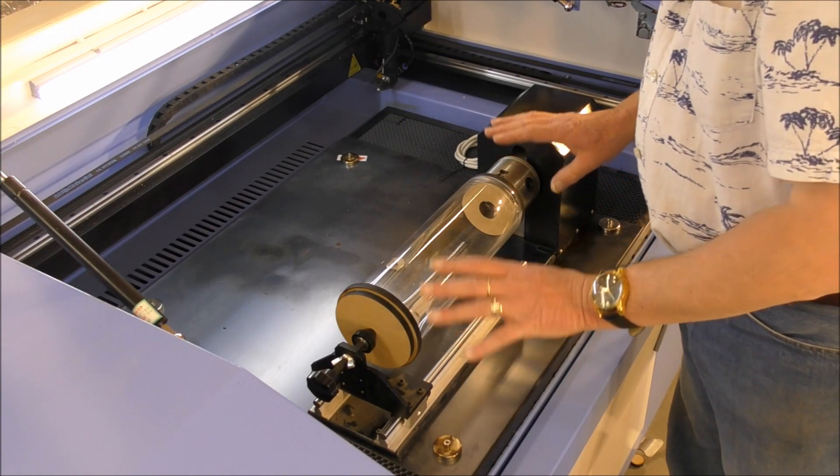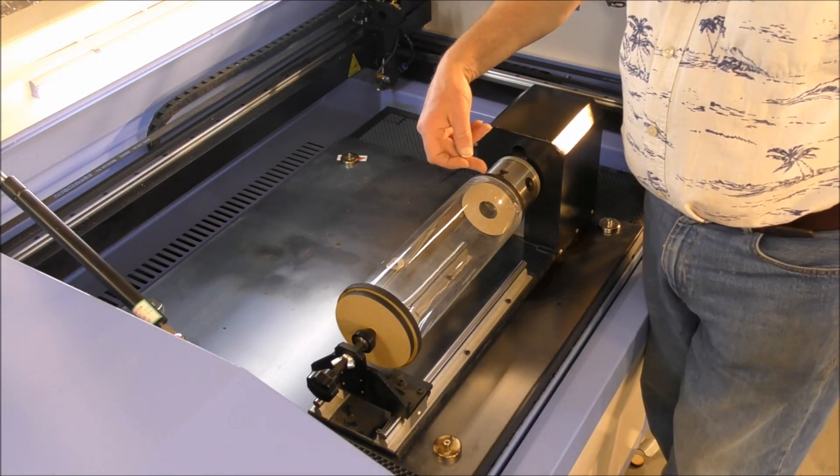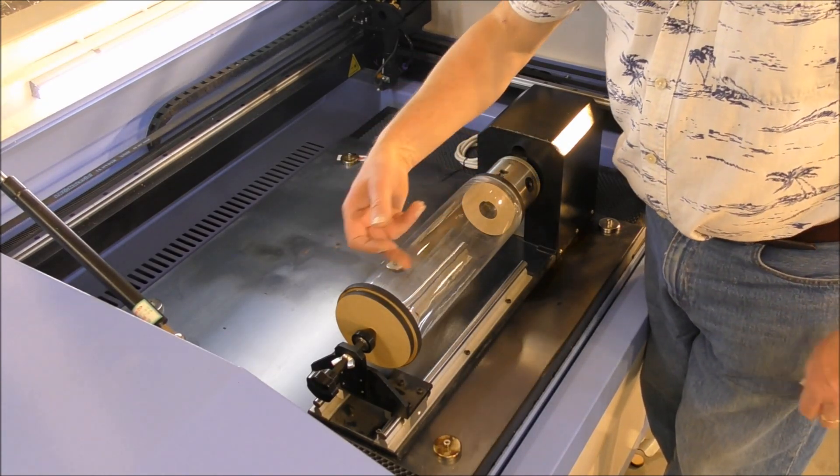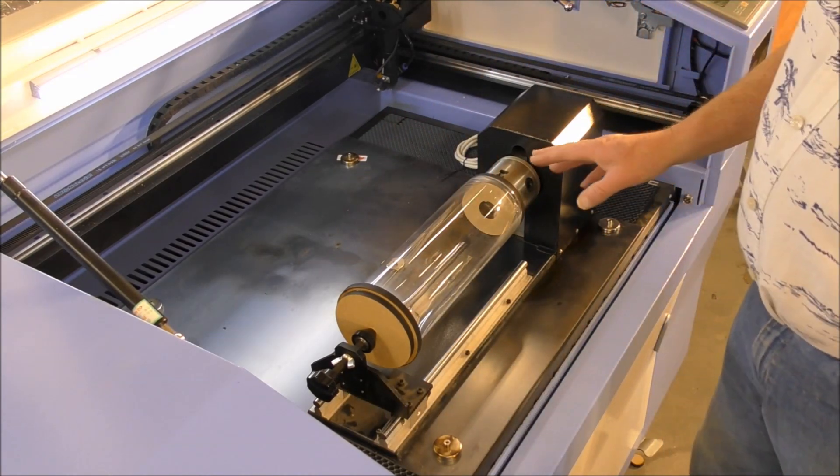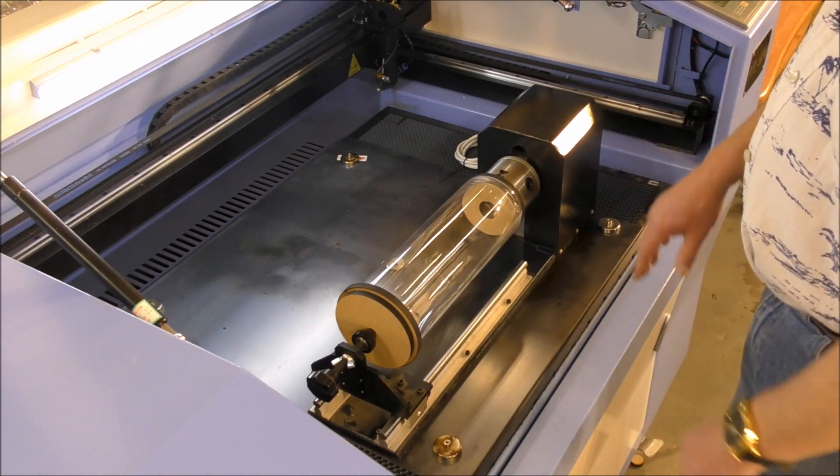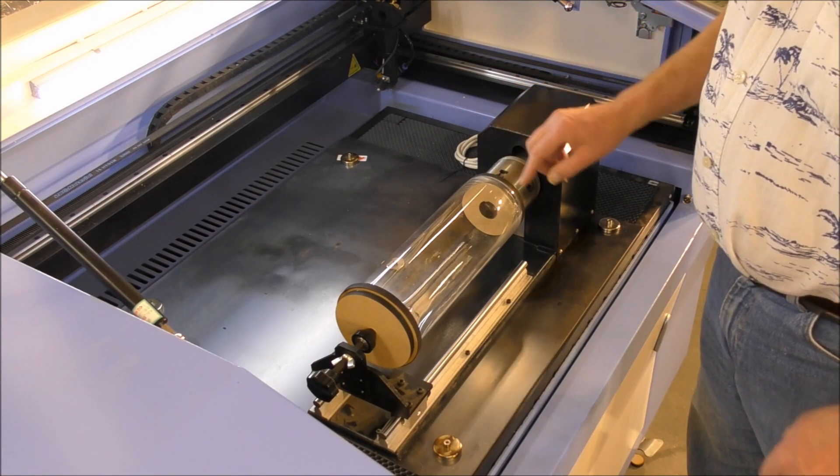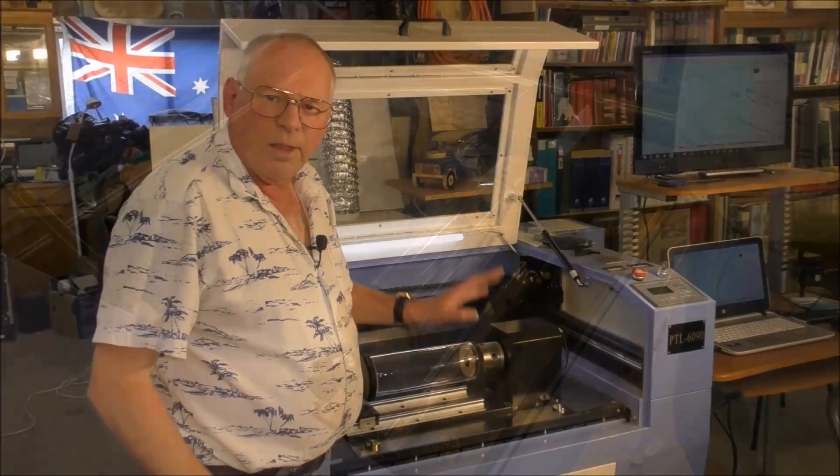And now this is set for the laser to, for us to zero the laser on here. And for the laser to cut our design on the outside of this vase. Obviously, the bed needs to be lowered down about so far. And then I will zero this over. Now, that will be the next laser video.